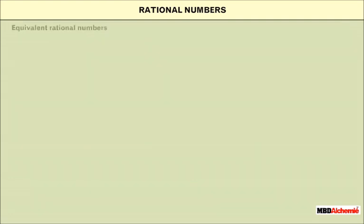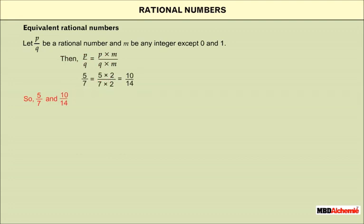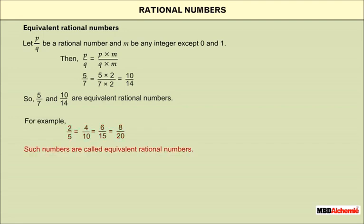Equivalent rational numbers: let p/q be a rational number and m be any integer except 0 and 1. Then p/q is equal to (p × m) / (q × m). For example, 5/7 and 10/14 are equivalent rational numbers. Similarly, 2/5 = 4/10 = 6/15 = 8/20. Such numbers are called equivalent rational numbers.